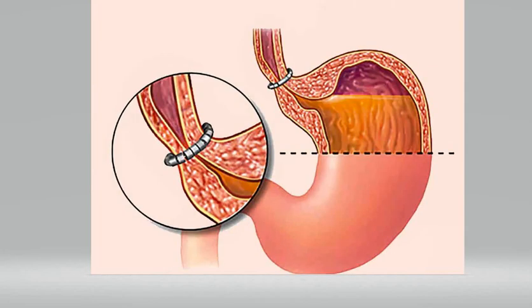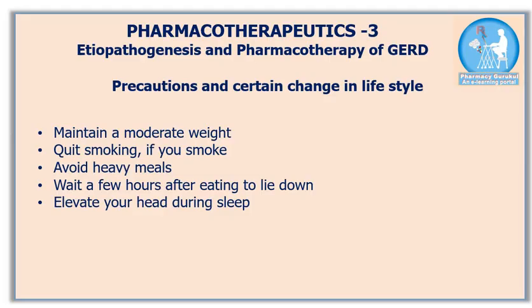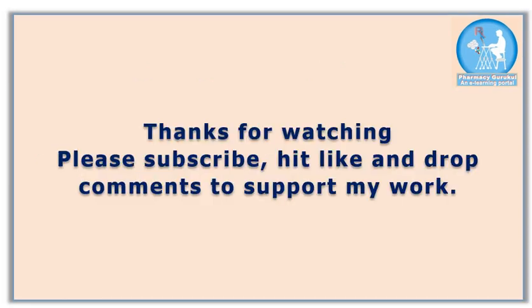Another option for GERD treatment is surgery. In the image you can see a device made up of small beads that has been placed around the esophagus, referred to as the LINX device. Another surgical procedure is Nissen fundoplication, in which the surgeon wraps the top part of the stomach around the lower part of the esophagus. Some important precautions must be taken to reduce further complications of GERD. Thank you so much.